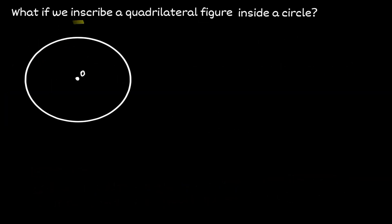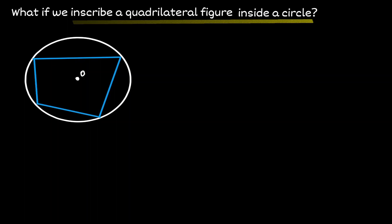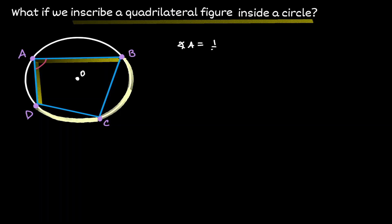Let's take a look at another scenario: what would happen if we inscribe a quadrilateral inside a circle? Let's draw a quadrilateral inside the figure and call those intersections A, B, C, and D. When we consider two sides of the quadrilateral, they define an inscribed angle A, which equals half the length of the opposite arc. When we consider the other two sides, they also form another inscribed angle — let's call it angle C — which will be half of its opposite arc, arc DAB.